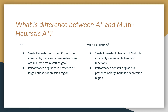The basic difference between A star and multi-heuristic A star is that A star considers a single heuristic function, whereas multi-heuristic A star considers a consistent heuristic plus multiple arbitrarily inadmissible heuristic functions. Also, the performance doesn't degrade in multi-heuristic A star in the presence of large heuristic depression regions like it degrades in A star.